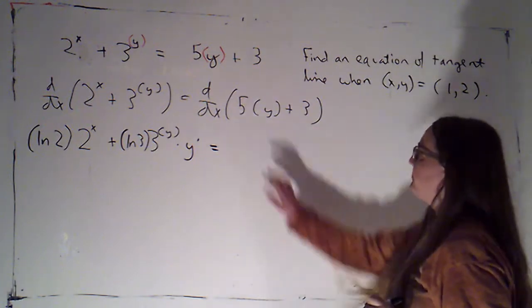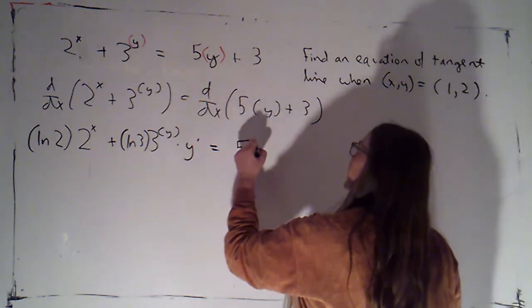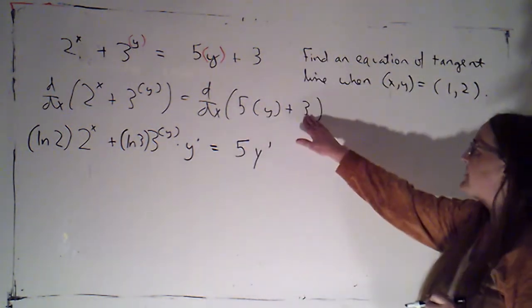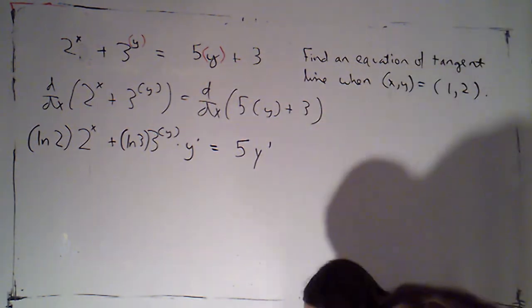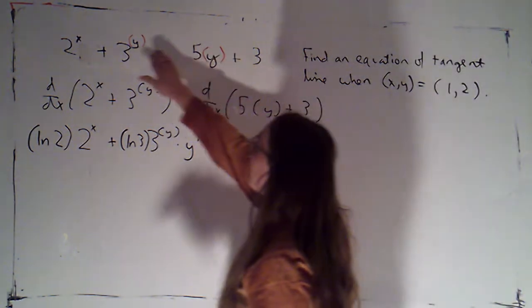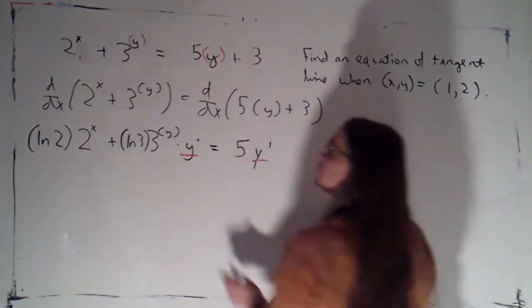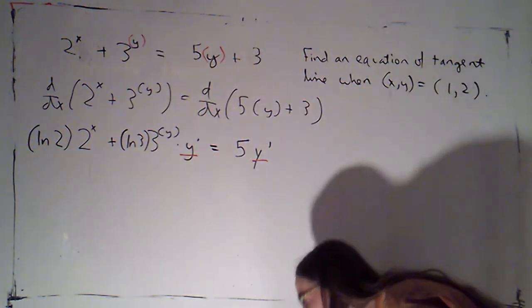That's going to equal, here I have 5 copies of y. When I take the derivative, that's going to give me 5 copies of y prime. And 3 is just a constant, so that drops out. Quick check. I had two y's in the original formula. I've got two y primes when I'm done taking the derivative. That matches.